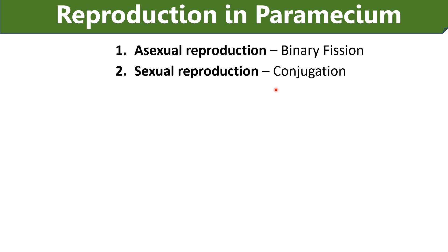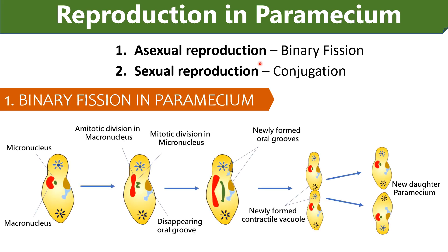Reproduction in paramecium: Most of the time, the favorable mode of reproduction is asexual, although sexual reproduction is seen as well. Asexual reproduction is by binary fission and sexual reproduction is by conjugation. In binary fission, the mature paramecium cell divides into two cells and each grows rapidly into a new organism. During binary fission, the macronucleus divides amitotically and micronuclei go through mitosis. The gullet also gets divided into two parts. After that, the cell divides transversely and two identical new paramecium cells are formed.